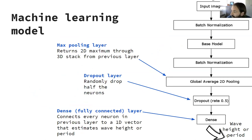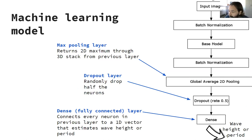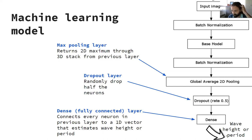The outputs of the base model are normalized and then pushed through a max pooling layer, which takes the four-dimensional stack from the previous layer and returns a two-dimensional stack of what are called network activations. Then randomly half of the neurons of that activation are dropped to prevent overfitting — I want the model to learn by generalizing rather than memorizing. Finally, the fully connected layer is a standard multilayer perceptron connected to every neuron in the previous layer, and that does the estimation. The model is set up such that the features arriving at that dense layer are linearly scaled to the quantity of interest.